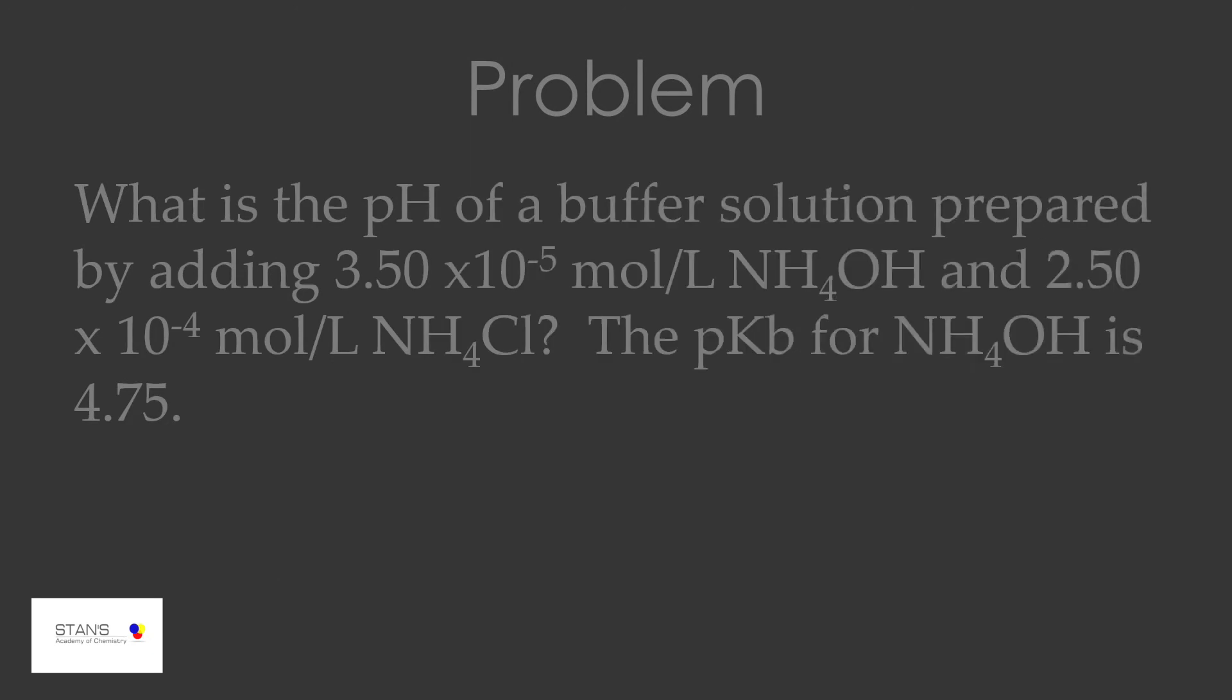Here is a problem for you: What is the pH of a buffer solution prepared by adding 3.50 × 10⁻⁵ mol/L NH₄OH and 2.50 × 10⁻⁴ mol/L NH₄Cl? The pKb for ammonium hydroxide is 4.75.